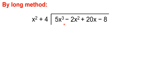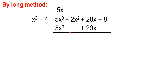I just rewrite it here. Same process: 5x cubed divided by x squared is 5x. 5x times x squared is 5x cubed. Then, 5x times 4 is 20x. I will align it here. Then, bring down the negative 2x squared. 20 minus 20 is 0, so I'll just bring down the negative 8.